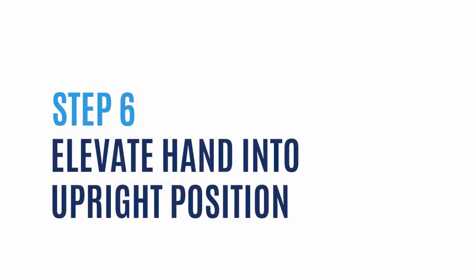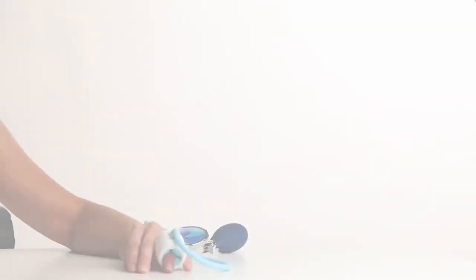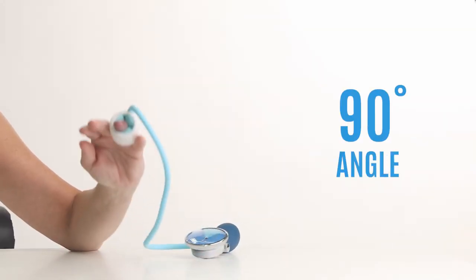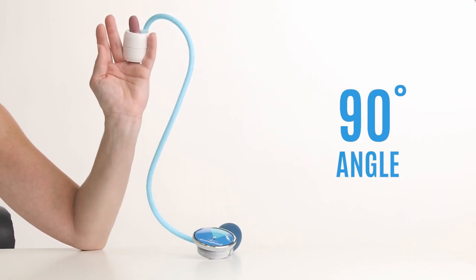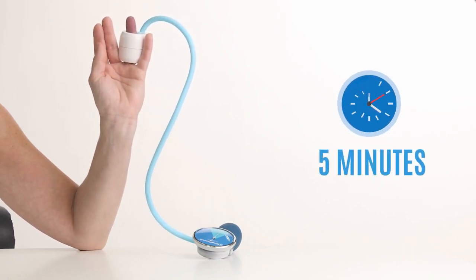Step 6: Elevate the hand into the upright position. Have the person elevate their hand to a 90 degree angle with their elbow resting on the table. Keep the hand elevated for a minimum of 5 minutes.